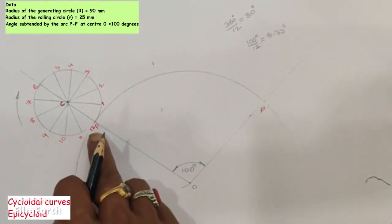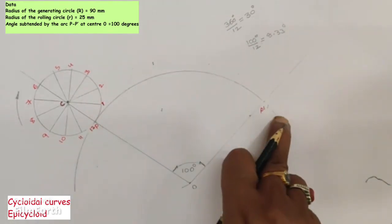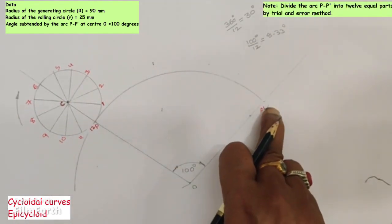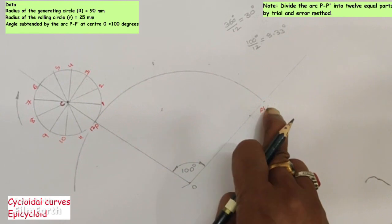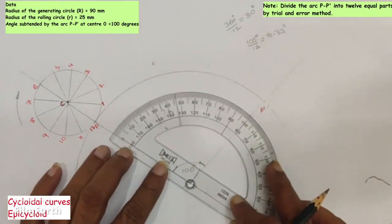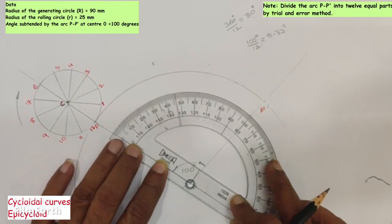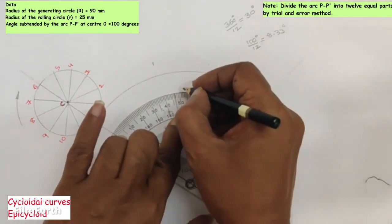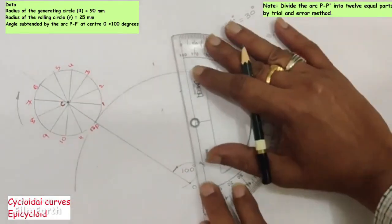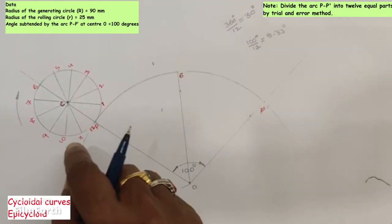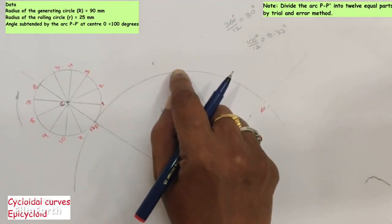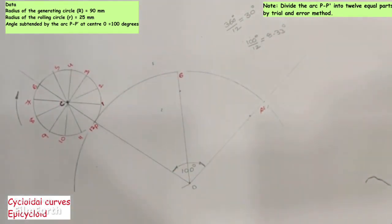To divide arc PP dash into 12 equal parts using trial and error, first divide PP dash into two equal parts. The total angle is 100 degrees, so each half is 50 degrees. Then divide the first half arc P6 into six equal parts by trial and error.